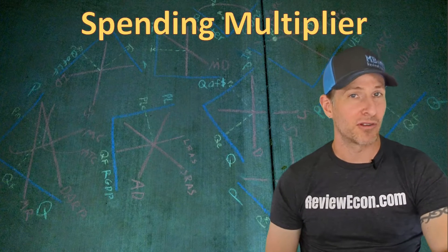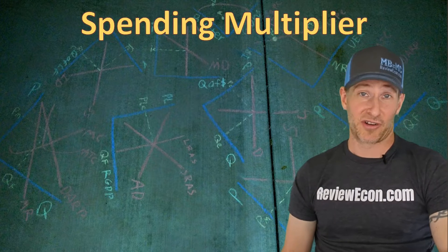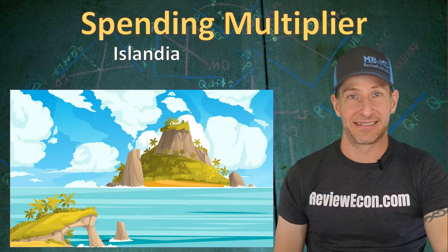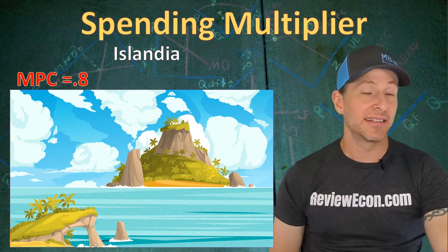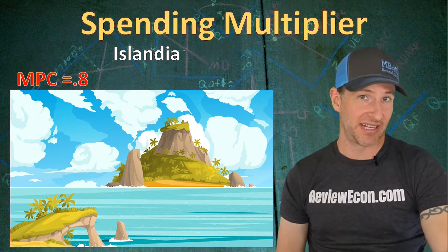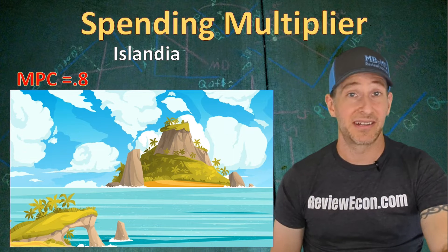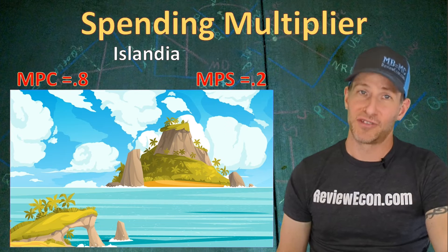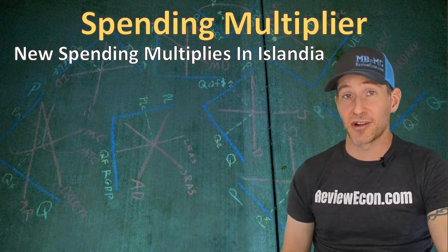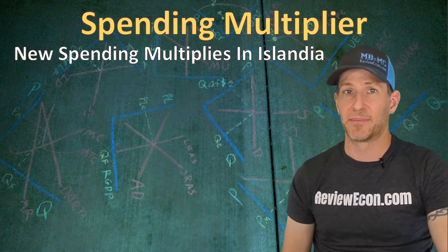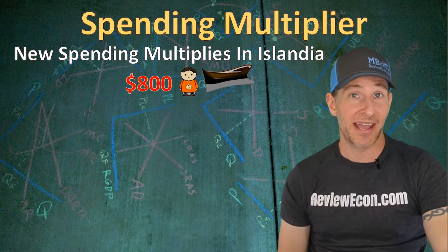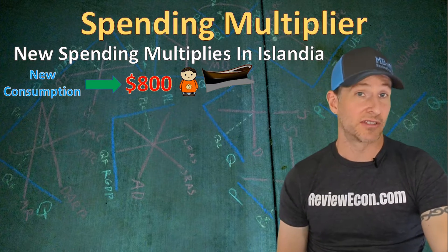Now we're going to move on to how the marginal propensity to save and marginal propensity to consume can impact an overall economy with the spending multiplier. We're going to look at the country of Islandia. Every consumer on this island has a marginal propensity to consume of 0.8 — they spend 80% of changes in income — and a marginal propensity to save of 0.2. When there's new spending in Islandia, that spending multiplies through the economy and has a much larger impact on GDP. Victor just earned $1,000 and he's going to spend 80% of that — $800 — on a new canoe. This is $800 worth of new autonomous consumption.